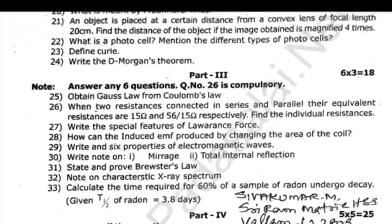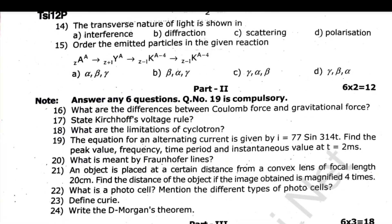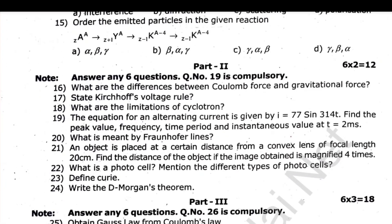Now, Part 3, 6 to 3, 18, 3 marks is compulsory. When 2 resistances connected in series and parallel, equivalent resistances are 15 ohm and 56 by 15 ohm. Find the individual resistances. If you look at this question, you have compulsory.